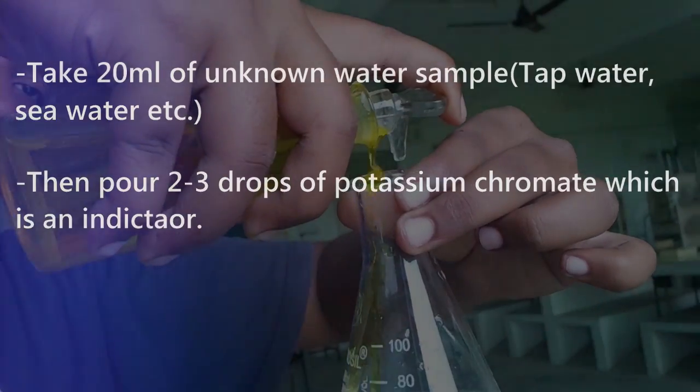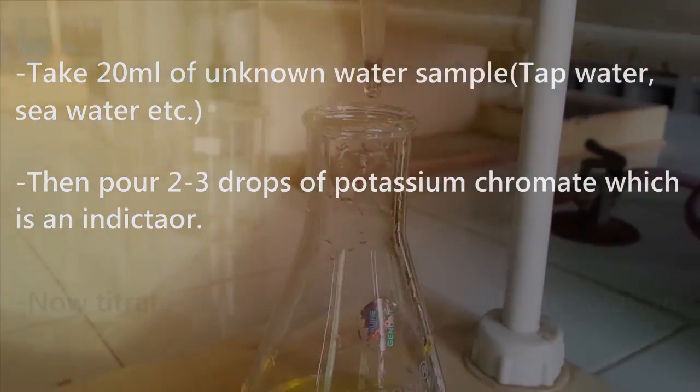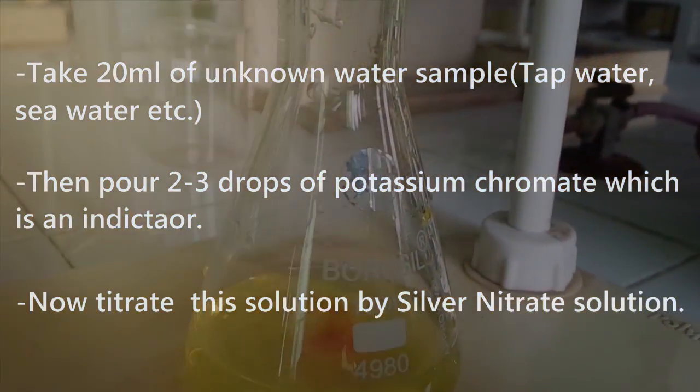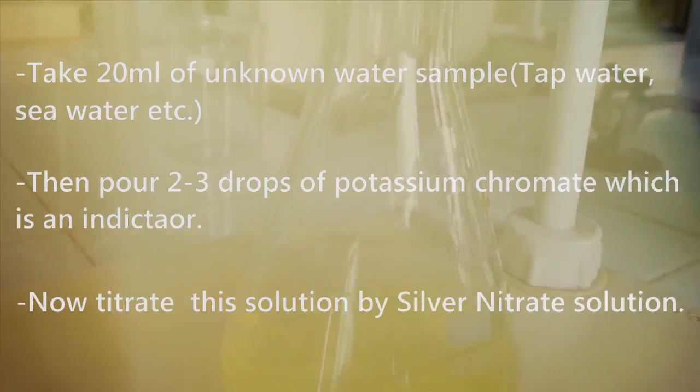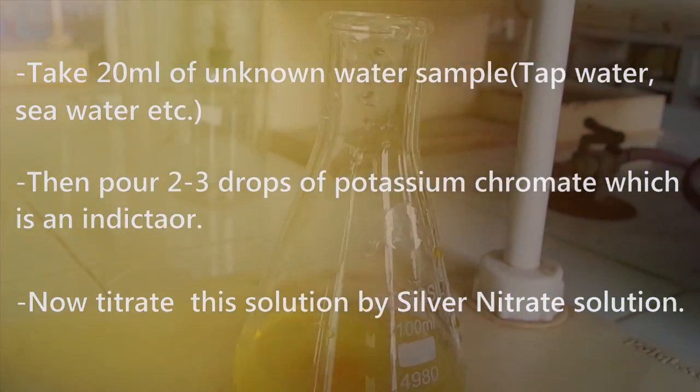Then pour 2-3 drops of potassium chromate which is an indicator. Now just titrate this solution by a silver nitrate solution. Repeat these steps up to 3 times to get precise reading of chloride content. So let's start.